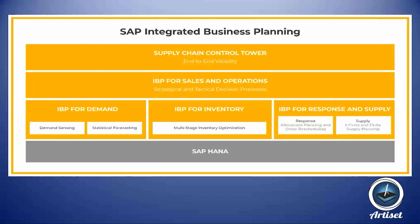All these modules sit on the SAP HANA platform in the cloud. There is an Excel UI as well as a Web UI — the Web UI is for configuring IBP settings, and the Excel UI is for loading and checking data. Additionally, there is CPI-DS (Cloud Platform Integration for Data Services), which connects the SAP Integrated Business Planning system with other systems like ECC, APO, or others. That's a brief overview of this topic.